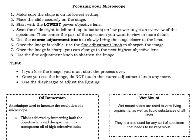Now use the coarse adjustment knob to slowly bring the stage closer to the lens. Once the image is visible, use the fine adjustment knob to sharpen the image. Once the image is sharp, you can change to the next highest objective lens to zoom in. Use the fine adjustment knob to sharpen the image again. If you lose the image at any point, you have to start the process over. Once you see the image, do not move the coarse adjustment knob anymore. Use the diaphragm to adjust the lighting.